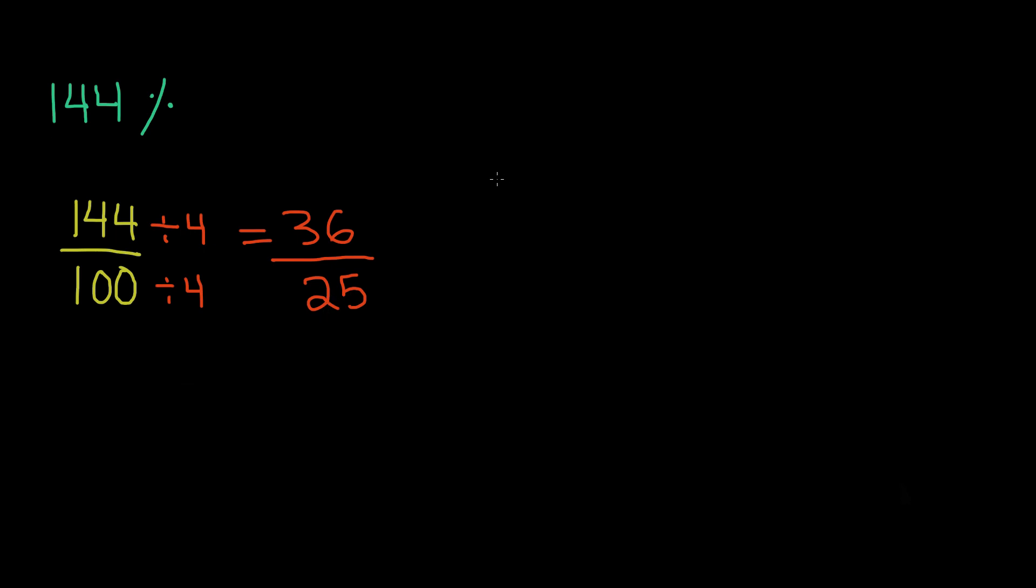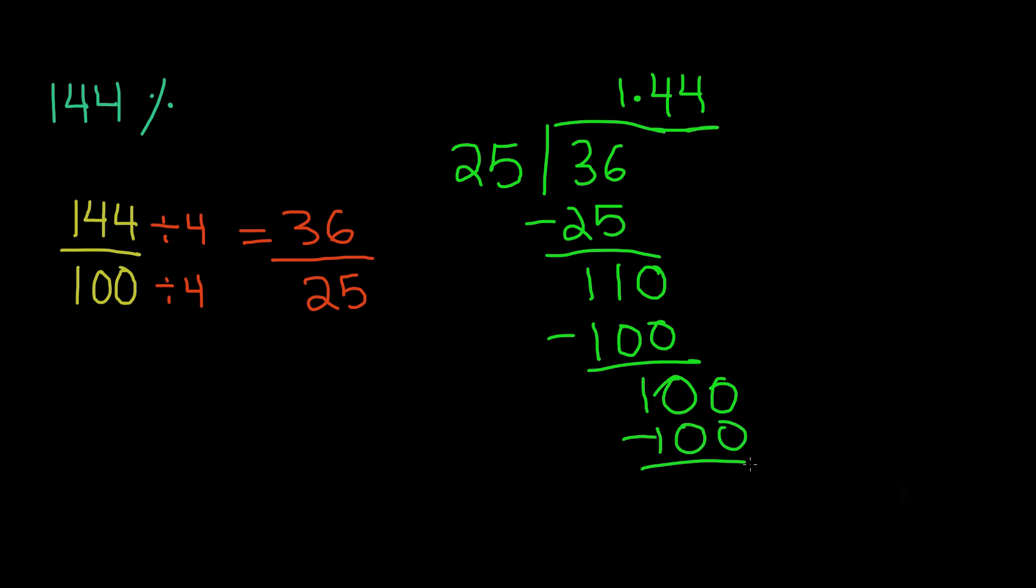So let's go ahead and do the division. 36 divided by 25. We know 25 goes into 36 once. Subtract and we get 11. Now 11 is smaller than 25 so we're going to have to add a decimal point and add a 0. Now 25 times 4 gives us 100. And we're left with 10. If we add another 0, we know that 25 times 4 once again gives us 100. And we're left with 0 as a remainder. That means 144% is equal to 1.44. So this was the method using long division.